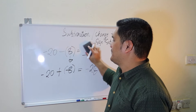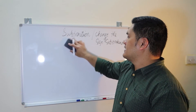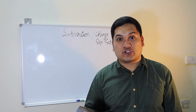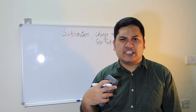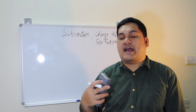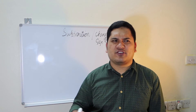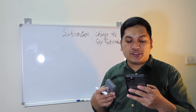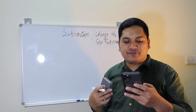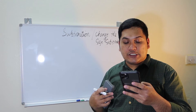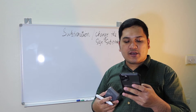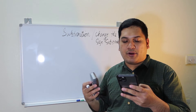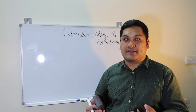Now let's proceed to multiplication. Multiplying and dividing integers is similar to what you have done in the past. The only difference is that with integers, you must be aware of which sign to apply to the final answer. The rules for determining the sign are straightforward: if the signs of the numbers you are multiplying or dividing are the same, the answer is positive. If the signs are different, the answer is negative.